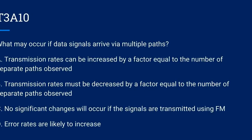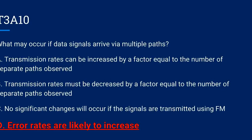T3A10. What may occur if data signals arrive via multiple paths? A. Transmission rates can be increased by a factor equal to the number of separate paths observed. B. Transmission rates must be decreased by a factor equal to the number of separate paths observed. C. No significant changes will occur if the signals are transmitted using FM. Or D. Error rates are likely to increase. The correct answer is D: error rates are likely to increase.